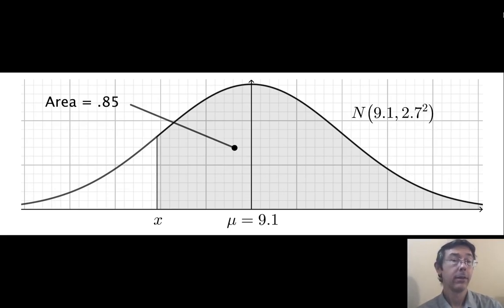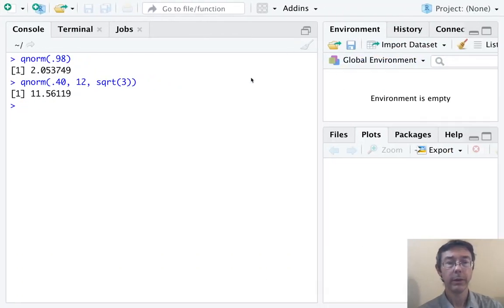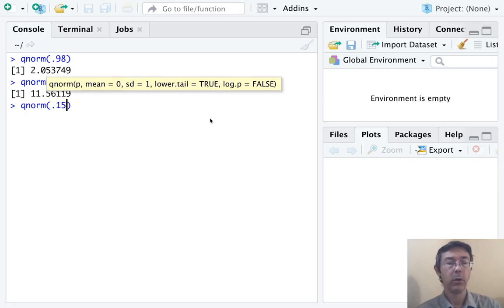So, here, the area that we're interested in isn't so much the shaded area, but the unshaded area. The total area is 1, so the shaded area is going to be 0.15. So, what we need to do here to get this answer is qnorm of 0.15, the area to the left that we're interested in,